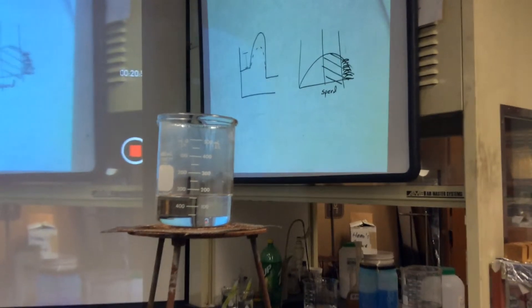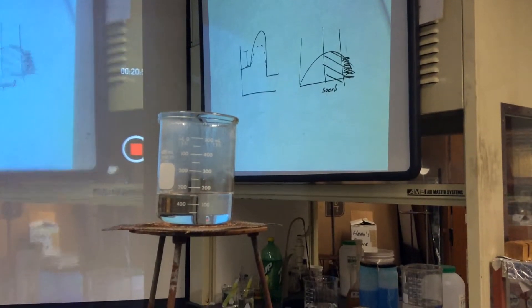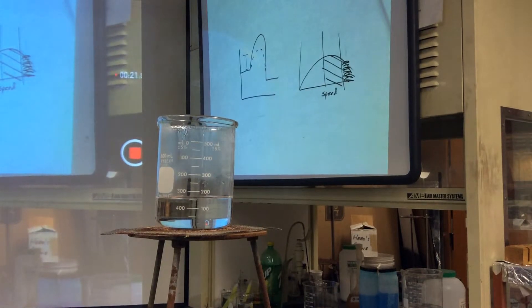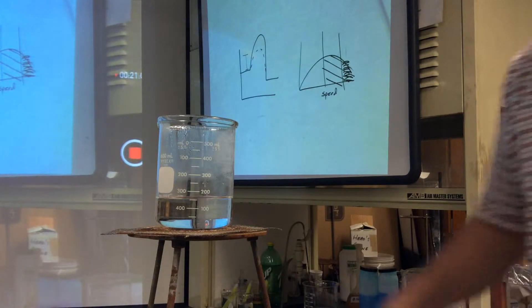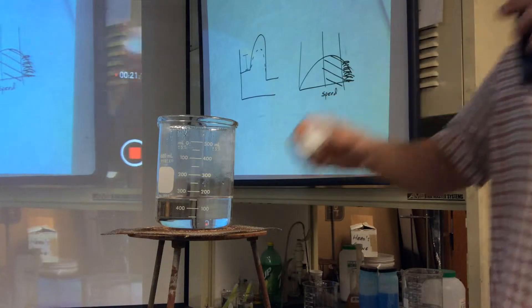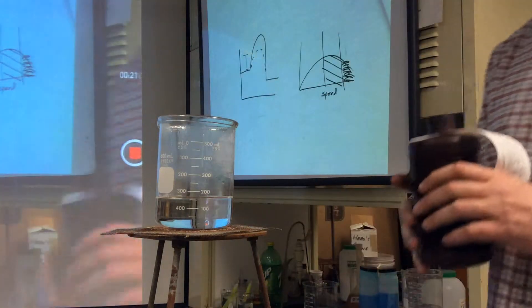This is Rochelle salt. It's going to make a complex and it's not really important to know what the reaction is, but to see what's happening and to observe. So what I'm going to start with is some hydrogen peroxide.